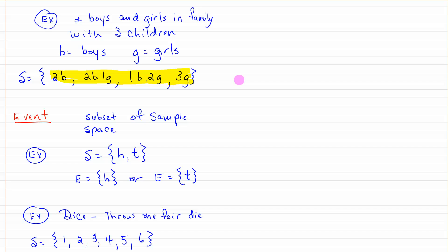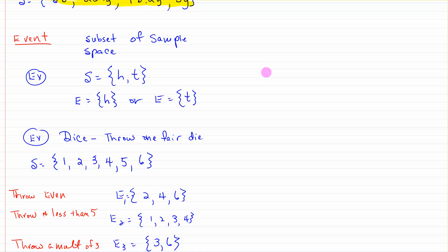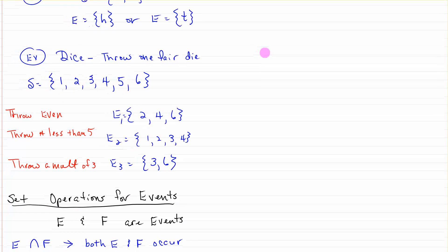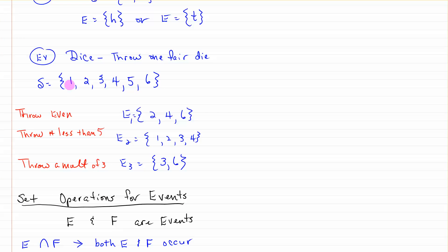The number of boys and girls in a family with three children, with B being boys and G being girls, you could have three boys, two boys one girl, one boy two girls, or three girls. Those are the options in the sample space. Now an event is a subset of that sample space. In sample spaces we're talking about all the possibilities. So if the sample space was H or T, an event could be H or T. For dice, if you throw one fair die your sample space is 1 through 6. To throw even, that would be an event and that would be 2, 4, 6. To throw a number less than 5, that event would be 1, 2, 3, 4. To throw a multiple of 3, that event the only two possibilities are 3 or 6.